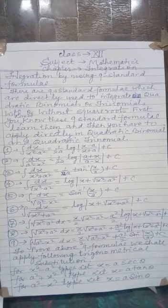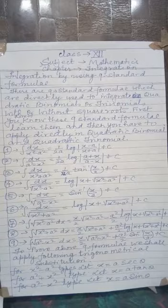Eighth formula: integration of under root (x square plus a square) into dx is equal to x upon 2 times under root (x square plus a square), plus a square upon 2 times log of (x plus under root of x square plus a square), plus c.